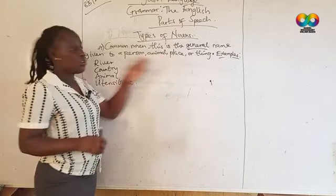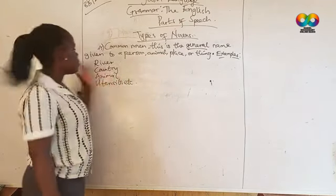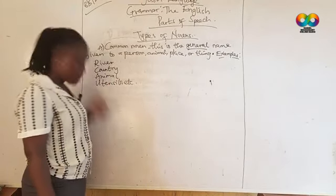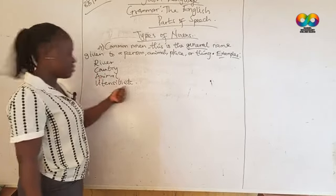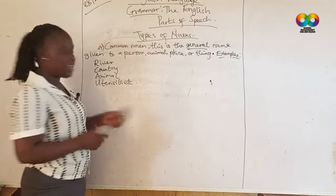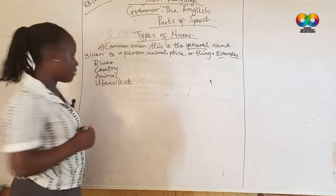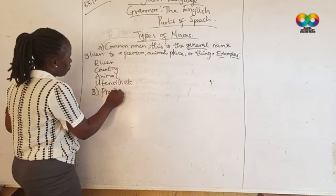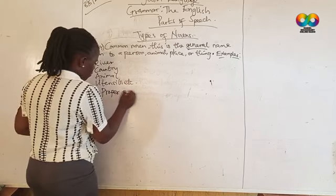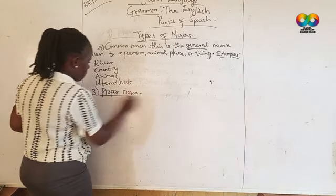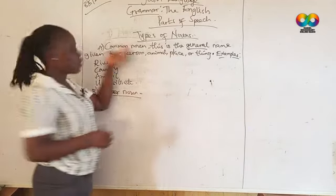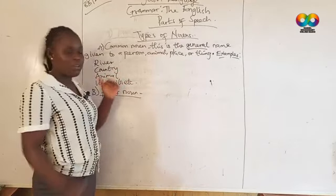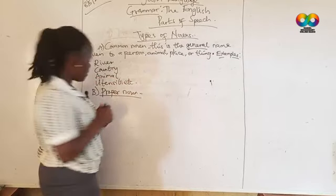The common noun is the general name given to a person, animal, place, or thing. For example, 'river' is known as the same thing all over the world — country, animal, utensils. Now let's talk about another type of noun: the proper noun. As opposed to the common noun, the proper noun is the specific name given to a person, animal, place, or thing. Underline the word 'specific.'